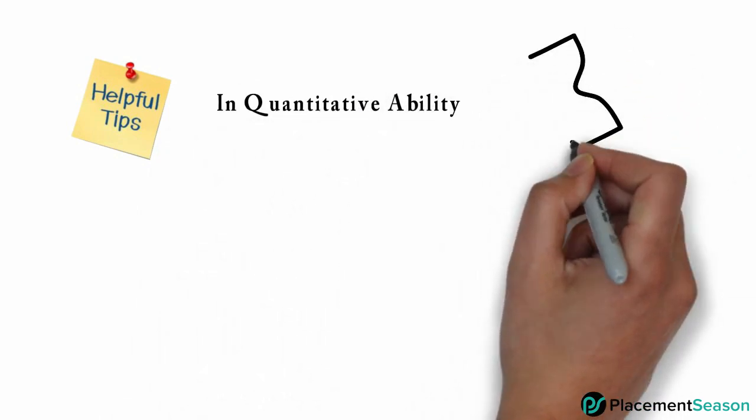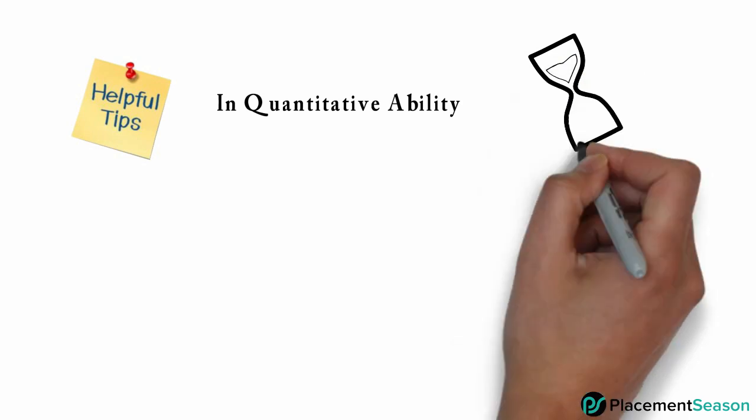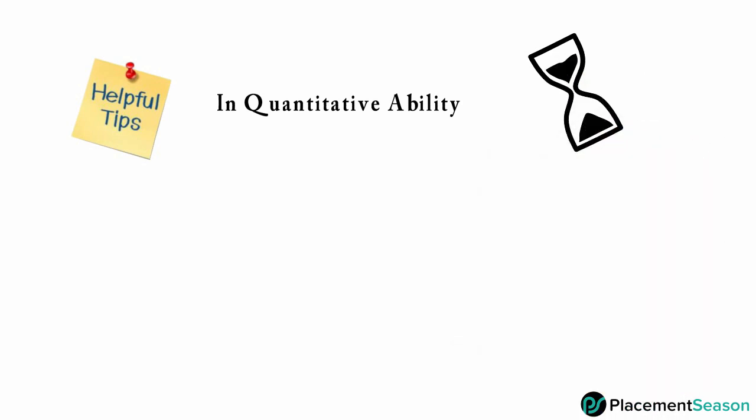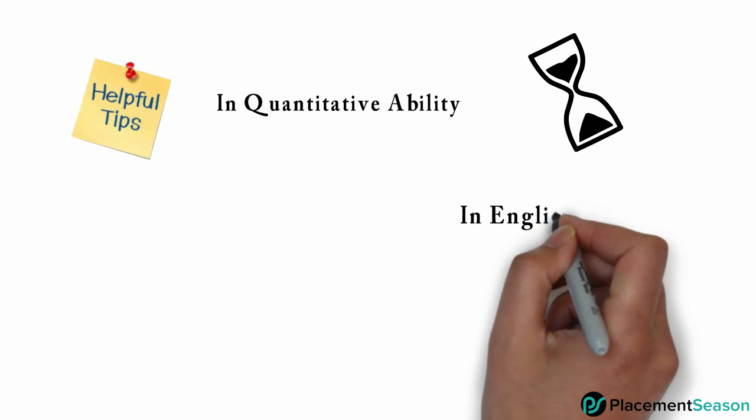In quantitative ability, 25 questions are to be answered in 35 minutes. Since it is an adaptive paper with approximately one minute per question, we recommend having a good amount of practice beforehand.